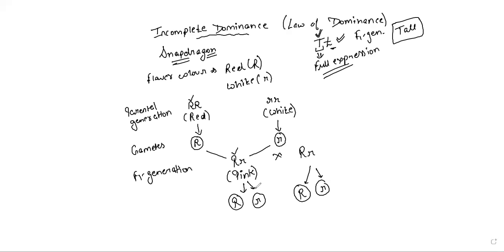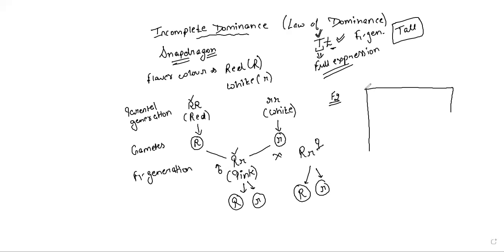50% of gametes carry capital R and 50% carry small r, so four gametes are formed in total. We consider one parent as male parent and the other as female parent. To see all possible genotypes in F2 generation, we draw a Punnett square.